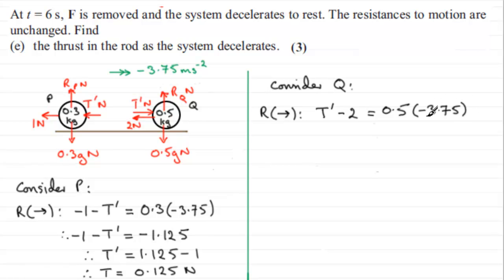Again, you've got to be very careful with this minus here. So if we do this, simplify this, we've got T dash minus 2 equals 0.5 times minus 3.75. And that comes to minus 1.875. So to get T dash then, just add 2 to both sides. So you've got 2 minus the 1.875. Work that out. And you get T dash equals 0.125 Newtons.